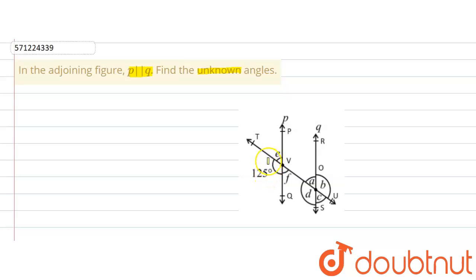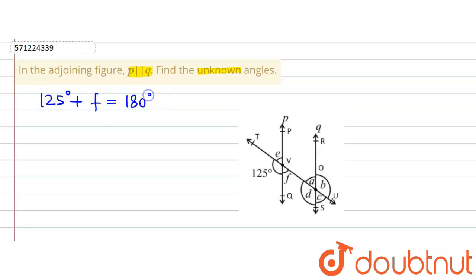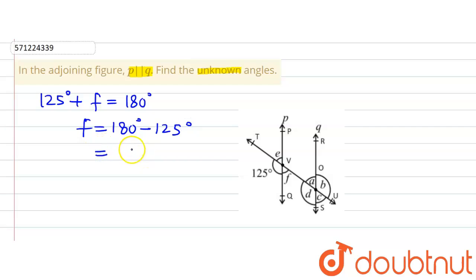We can observe that angle TVQ and angle F are forming a linear pair, therefore their sum will be equal to 180 degrees. So we will have 125° + F = 180°. This 125° moves to the right-hand side as a minus, giving us 180° − 125° = 55°. So the measure of angle F is 55 degrees.